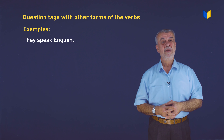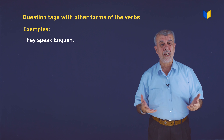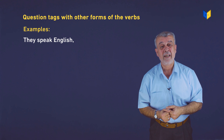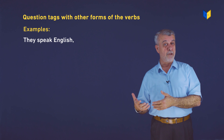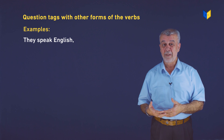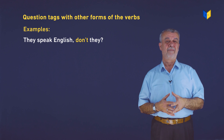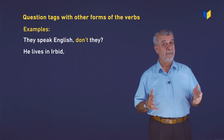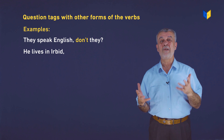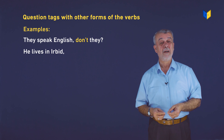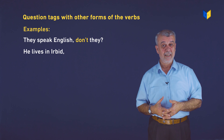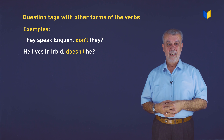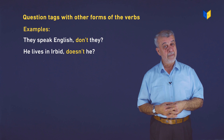For example: 'They speak English' — where is the helping verb? We bring don't or doesn't. They speak English, don't they? Another example: 'He lives in Irbed' — he lives in Irbed, doesn't he? Excellent.